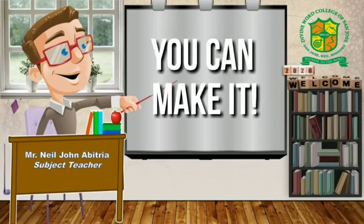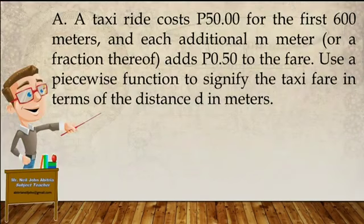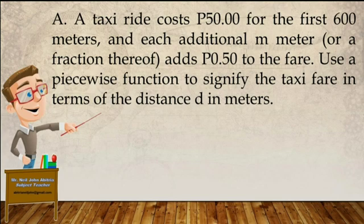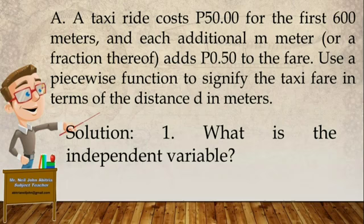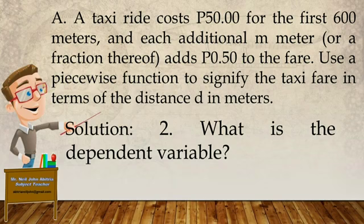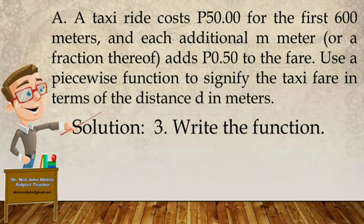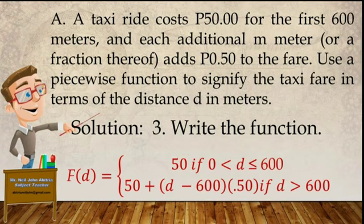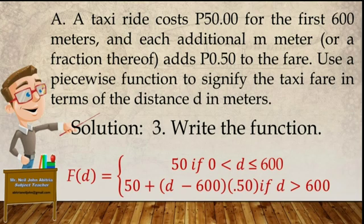Now, let's have an exercise on how to express real-life situations using piecewise functions. Are you ready, class? Letter A: A taxi ride costs 50 pesos for the first 600 meters, and each additional meter or a fraction thereof adds 0.50 to the fare. Use the piecewise function to signify the taxi fare in terms of the distance d in meters. The independent variable here is the meters traveled by the taxi, and the dependent variable is the taxi fare. To express it as a piecewise function: f of d equals 50 if the distance is less than or equal to 600; if the distance is greater than 600, the function is 50 plus the excess distance minus 600 meters multiplied by 0.50.